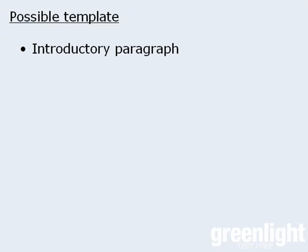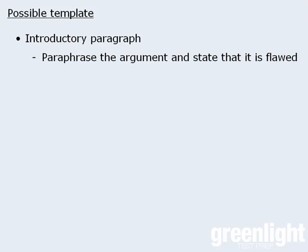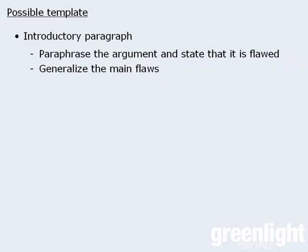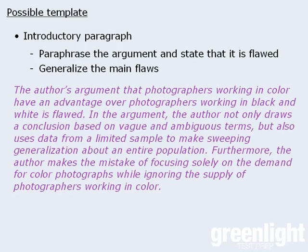Your introductory paragraph will have the following elements. Begin by paraphrasing the argument and stating that it is flawed. By paraphrasing the argument, you're showing the reader that you understand the basic structure of the argument. The remaining sentences will generalize the main flaws, so that later each flaw will be the subject of its own paragraph. Given all of this, we might write something like the following.